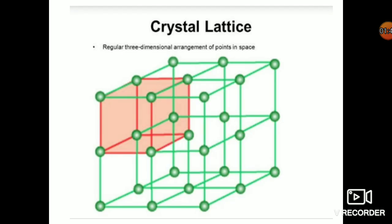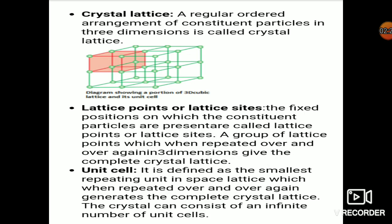In this picture, the constituent particles — the green spheres — are holding a fixed position. Each position occupied by the constituent particle is called a lattice point. To define the lattice point you need the x, y, and z axes in space. So lattice points or lattice sites are the fixed positions on which the constituent particles are present.